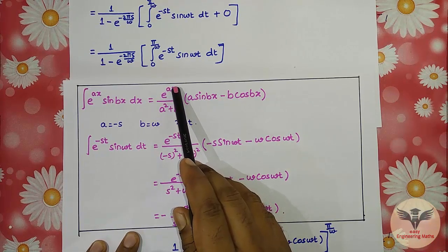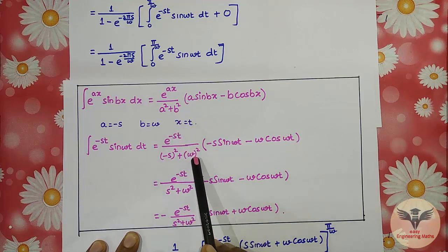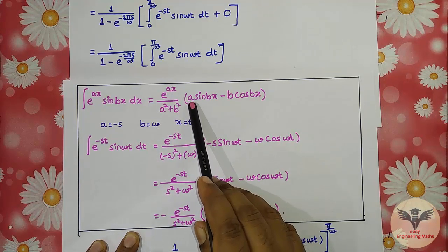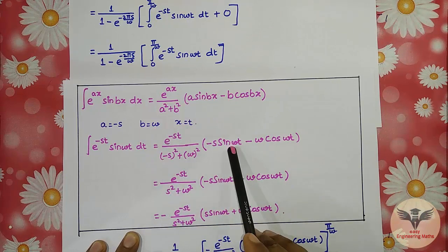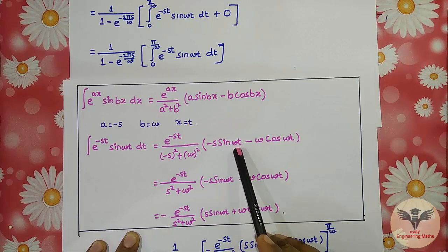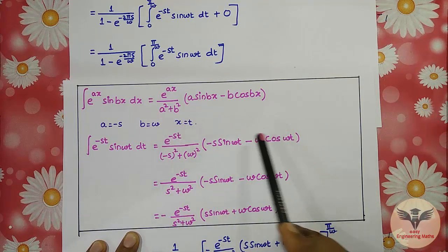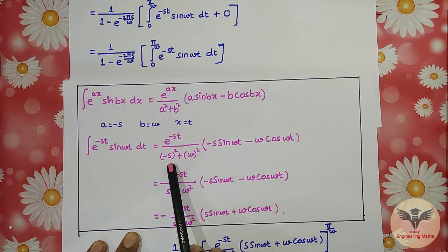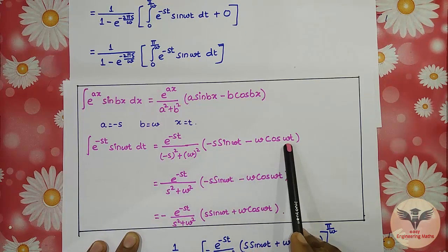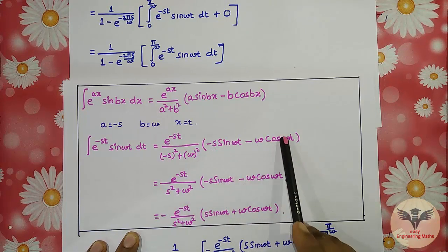Substituting a = −s, b = ω, x = t into the formula: the result is e^(−st) / [(−s)² + ω²] × [−s·sin(ωt) − ω·cos(ωt)], which simplifies to e^(−st) / (s² + ω²) × [−s·sin(ωt) − ω·cos(ωt)], evaluated with limits 0 to π/ω.